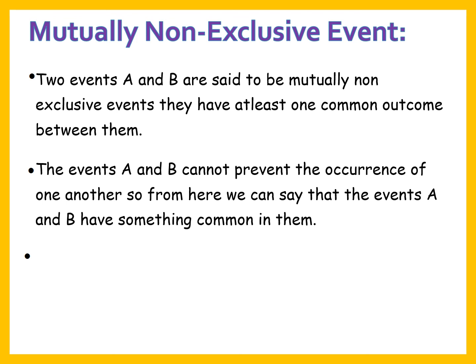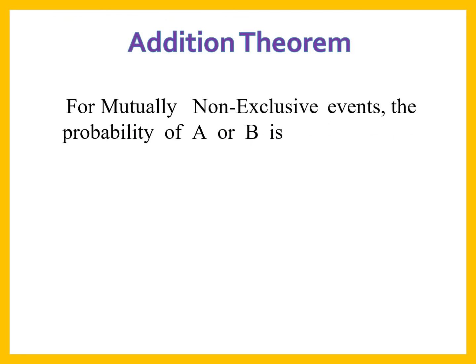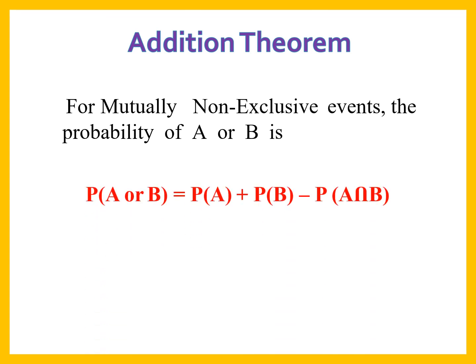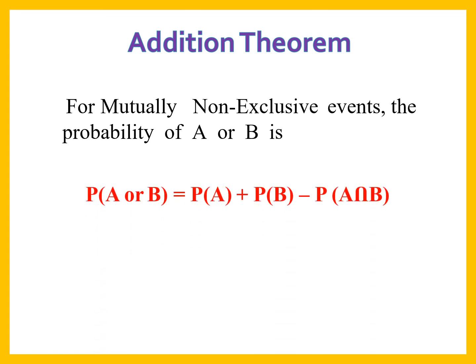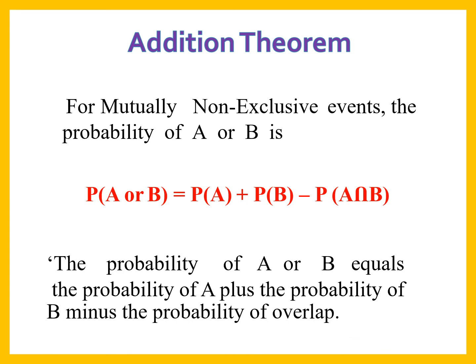For mutually non-exclusive events, the probability of A or B is equal to probability of A plus probability of B minus the combined probability, that is, minus P(A intersection B). We subtract the overlap because the two events have a common outcome.